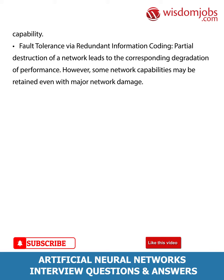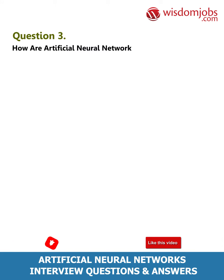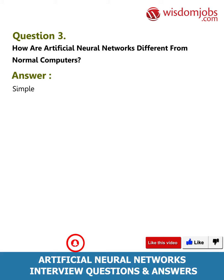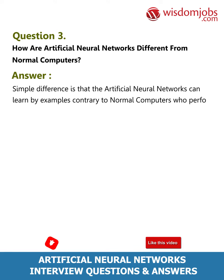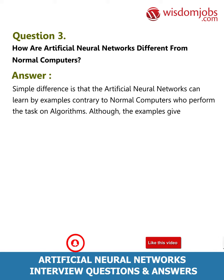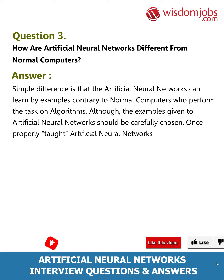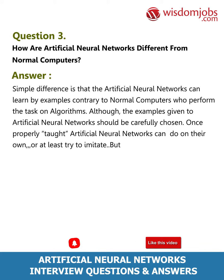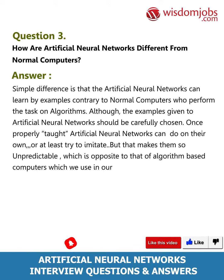Question 3: How are artificial neural networks different from normal computers? The simple difference is that artificial neural networks can learn by examples, contrary to normal computers which perform tasks based on algorithms. Although the examples given to ANNs should be carefully chosen, once properly taught, ANNs can operate on their own or at least try to imitate, making them unpredictable — opposite to algorithm-based computers we use in daily life.